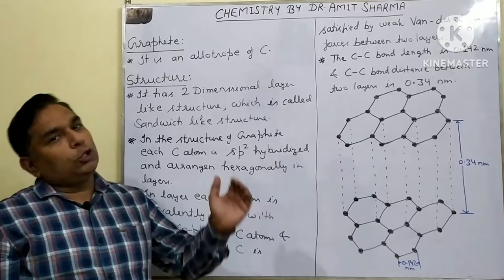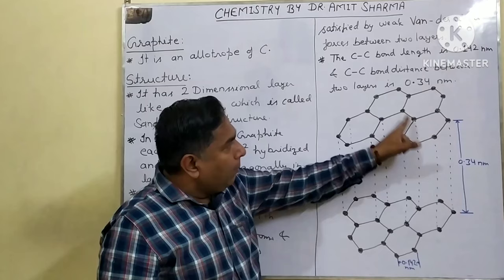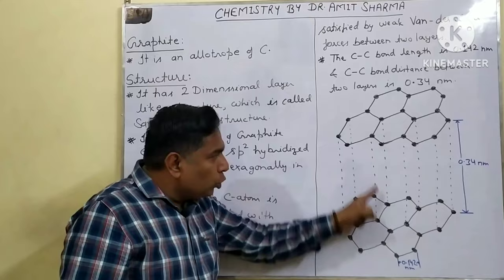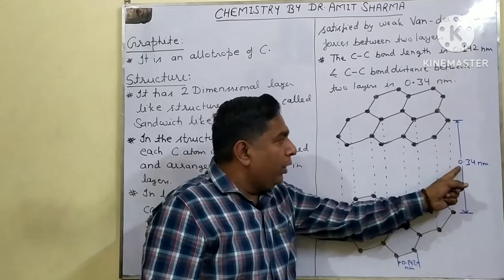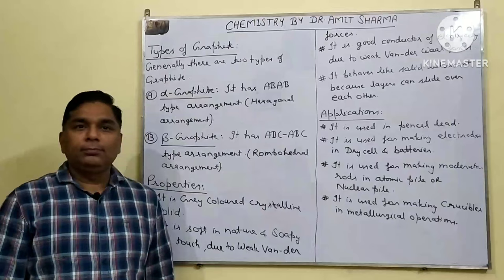Let me explain this with a diagram. The first two-dimensional layer is shown here, followed by the second layer in continuation. In the hexagons, each carbon atom is bonded to three carbon atoms via covalent bonds, and the fourth valency is shown by a dotted line representing van der Waals force connecting to the next layer. The bond distance between layers is 0.34 nm and within the layer is 0.142 nm.